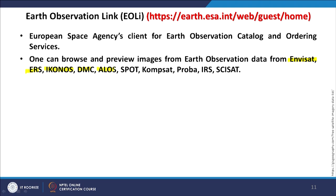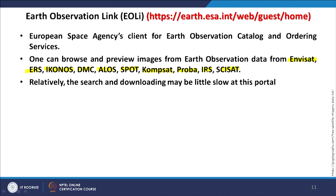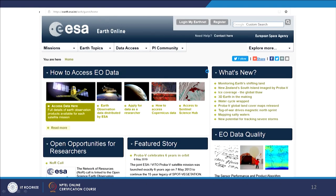EOLi provides data from ENVISAT, ERS, IKONOS, DMC, ALOS, SPOT, KOMPSAT, PROBA, and even IRS data from other country organizations. IRS data is generally available free of cost only after 3 years from the acquisition date. Downloading may be a little slow on this portal, but tutorials are available to help you learn the quickest way to search and download data. These are the main web portals for that purpose.